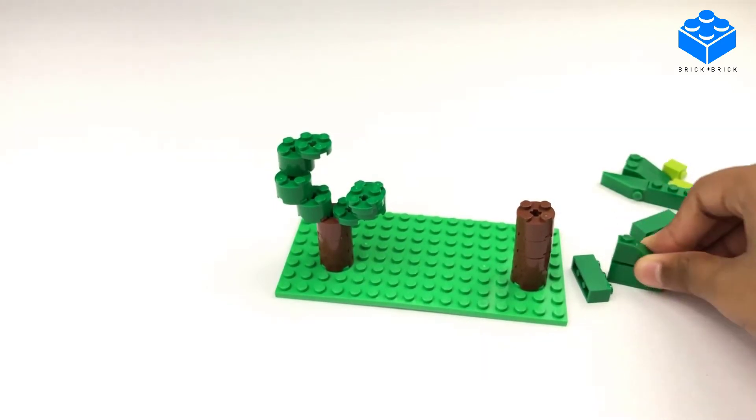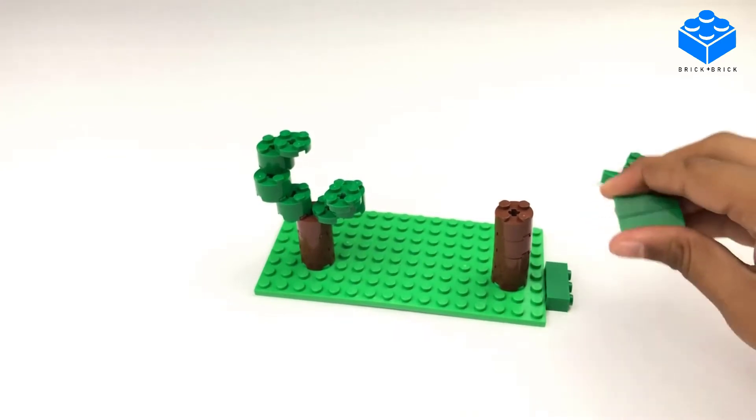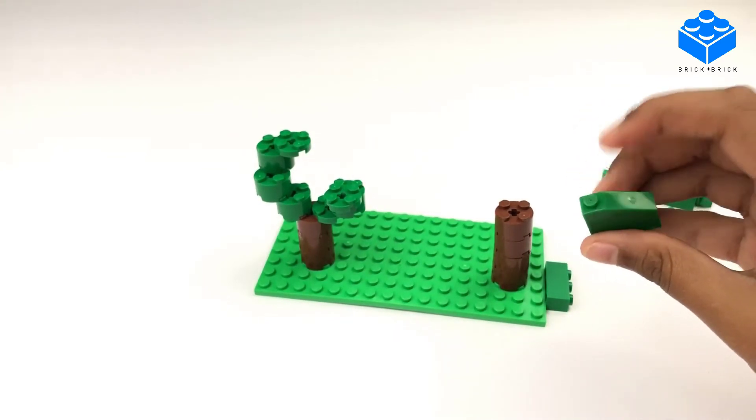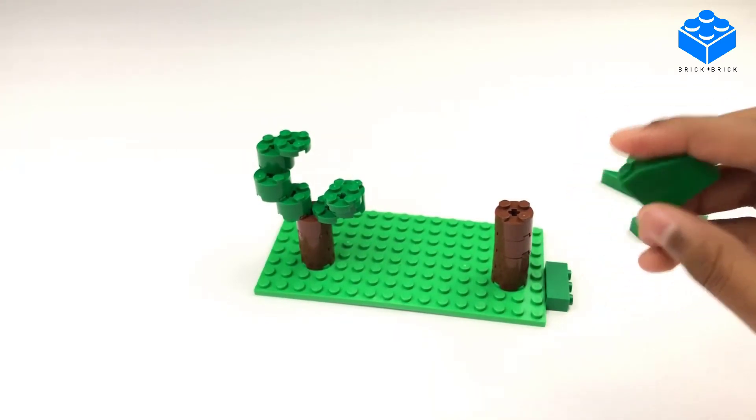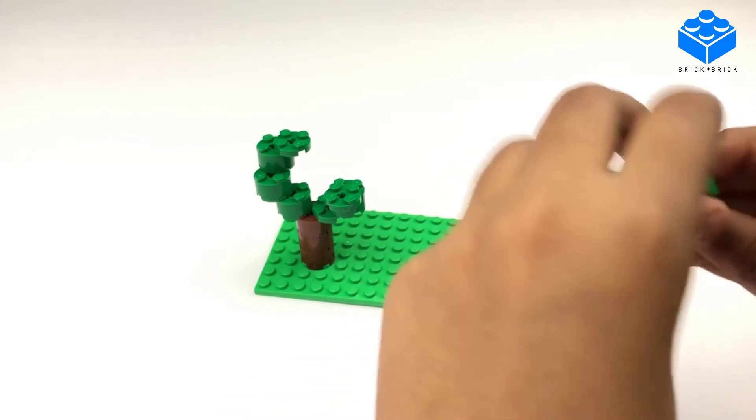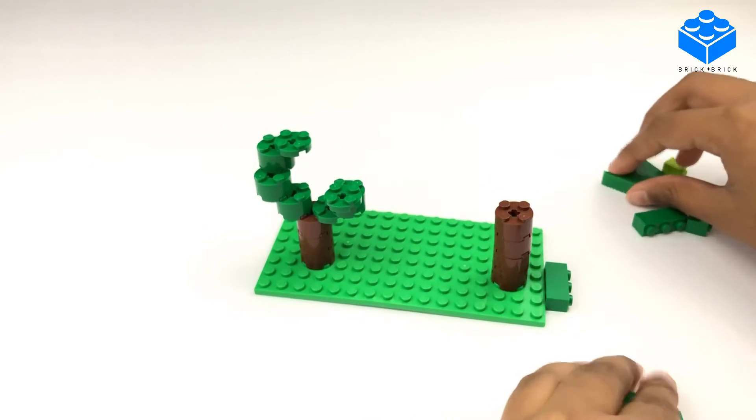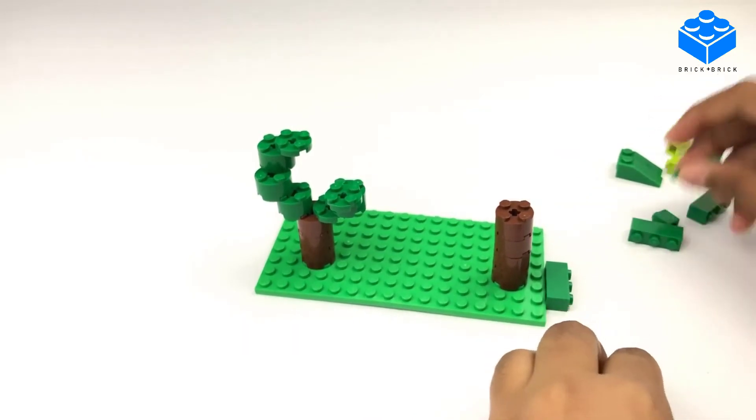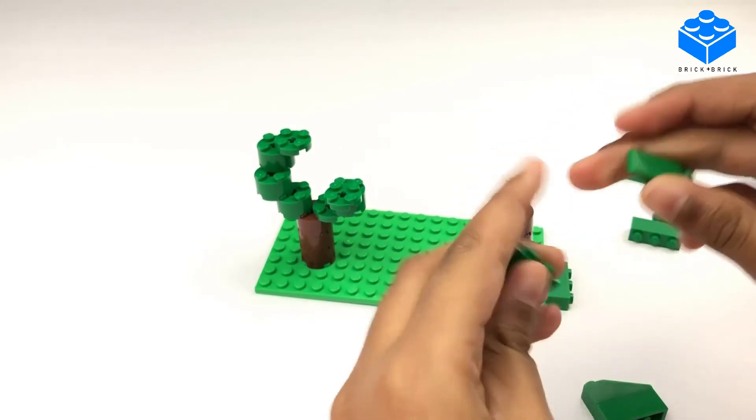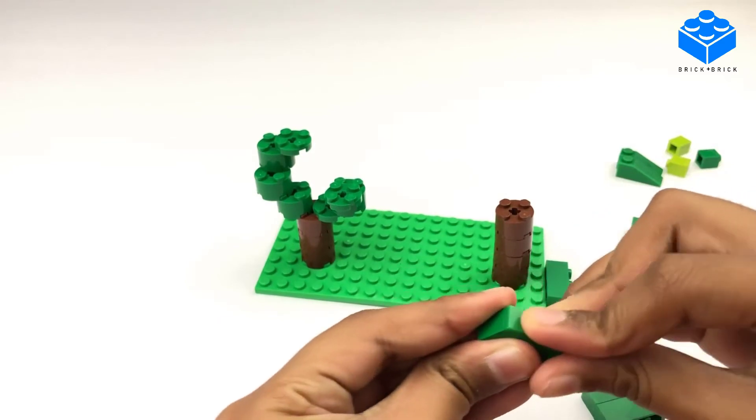Put your one by three's on top of your one by three regular pieces. Then do the same for all your other one by three slope pieces. Like this.